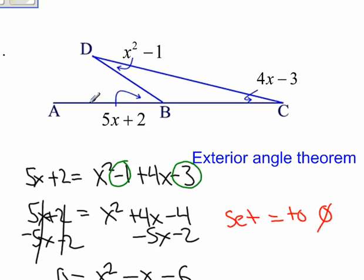So let's check it out. If the answer is 3, that means angle D is going to be 8. If x is 3, that means angle C is going to be 9. 9 degrees, 8 degrees. And if x is 3, that means this angle here, angle ABD, is going to be 17 degrees.